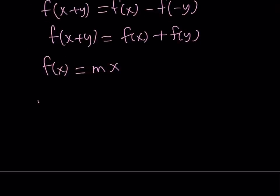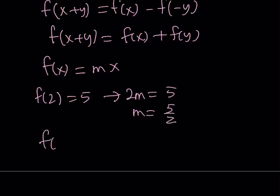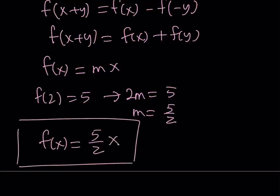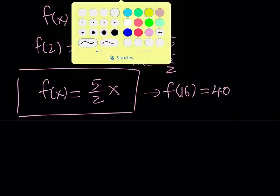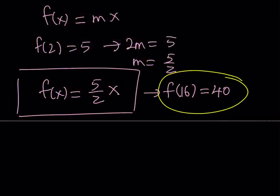Now, we do know that f of 2 is equal to 5. And f of 2 is basically 2m. So 2m is equal to 5, which means m is equal to 5 halves. From here, we can write f of x as 5 halves times x. We found a particular solution. And from here, we can basically evaluate f of 16. f of 16 just becomes 5 times 8, which is equal to 40. So that's going to be the solution we are looking for.